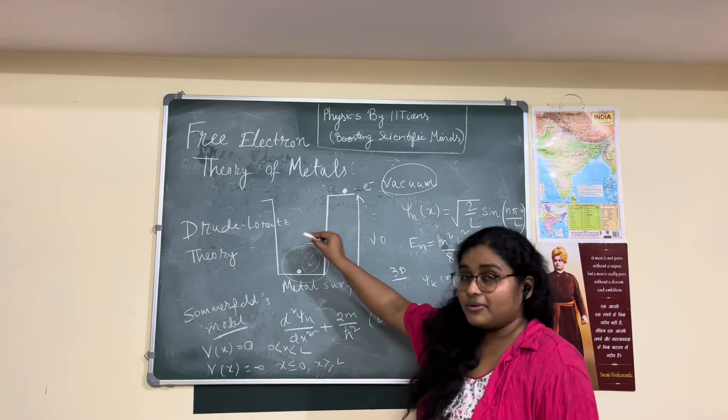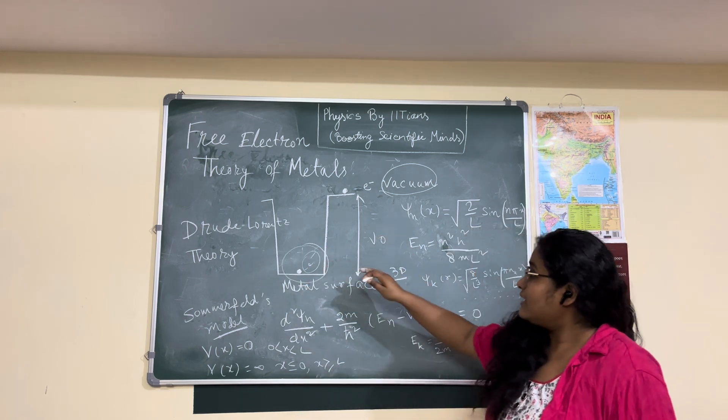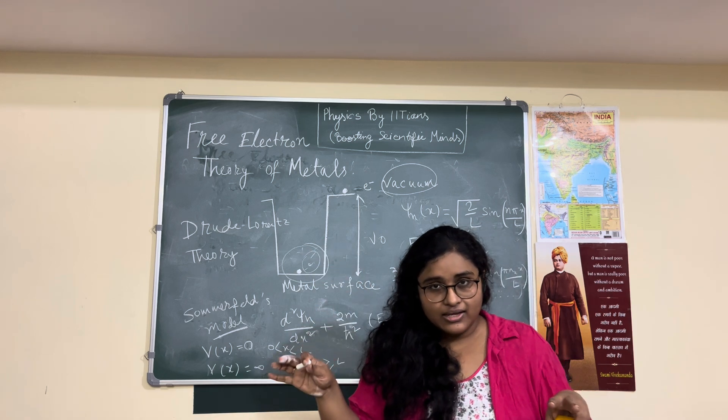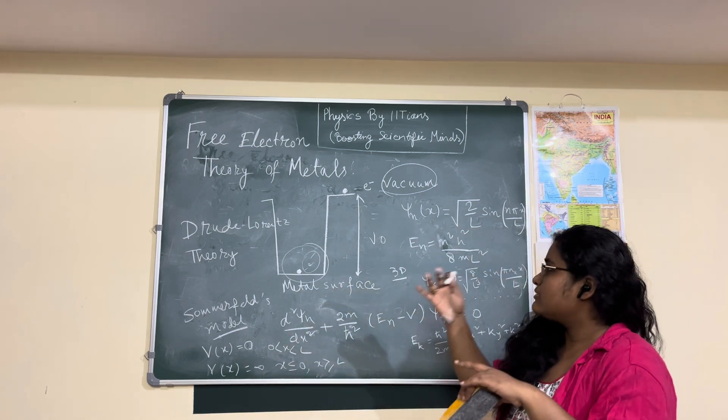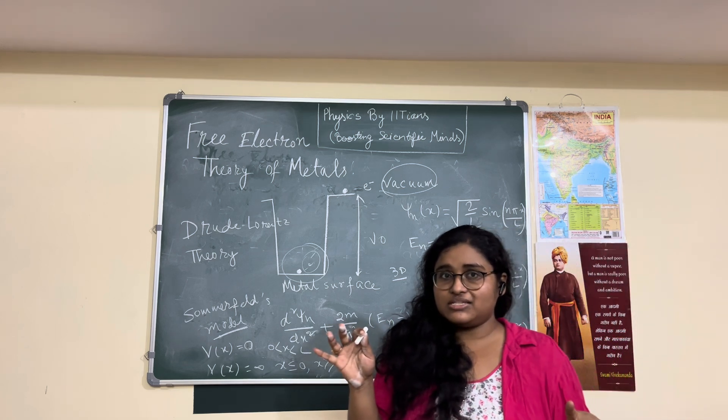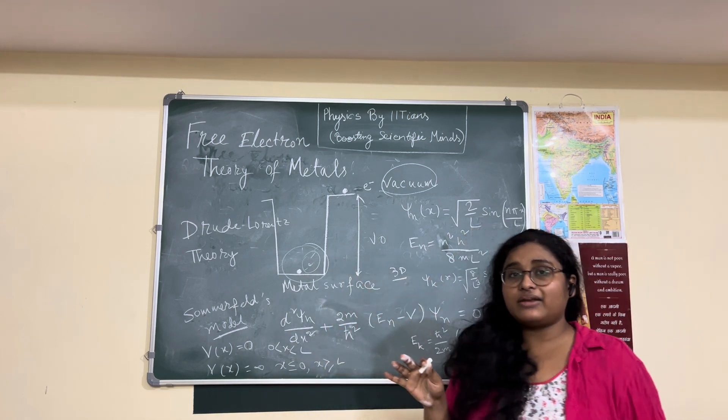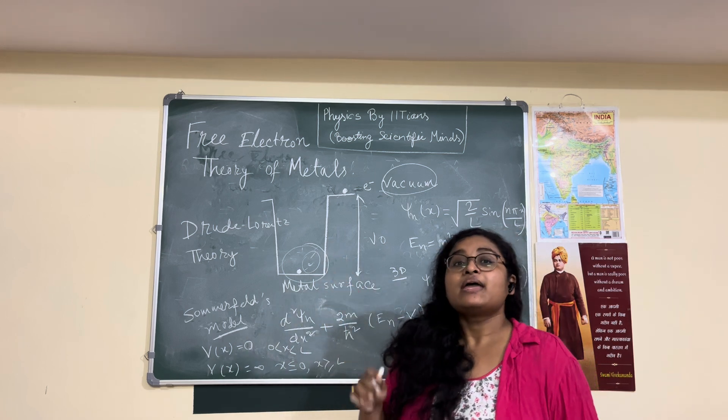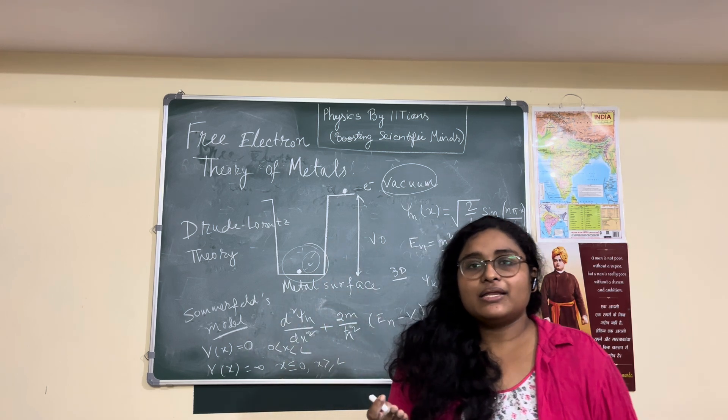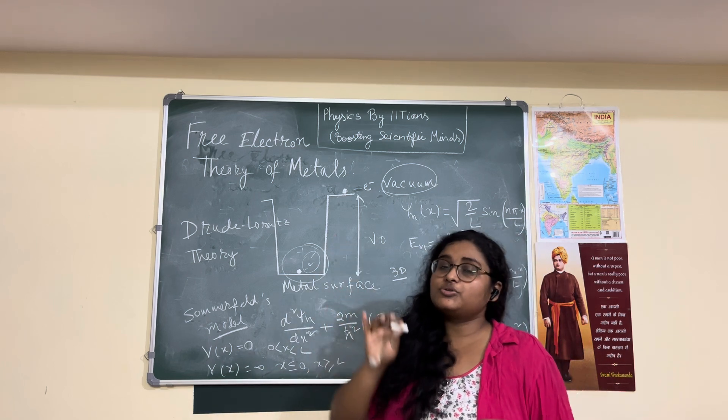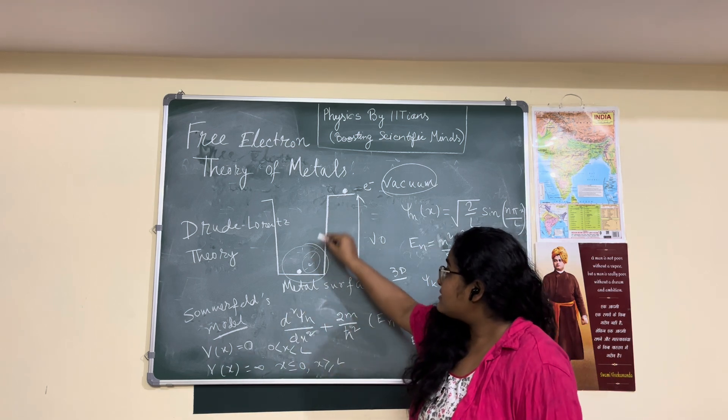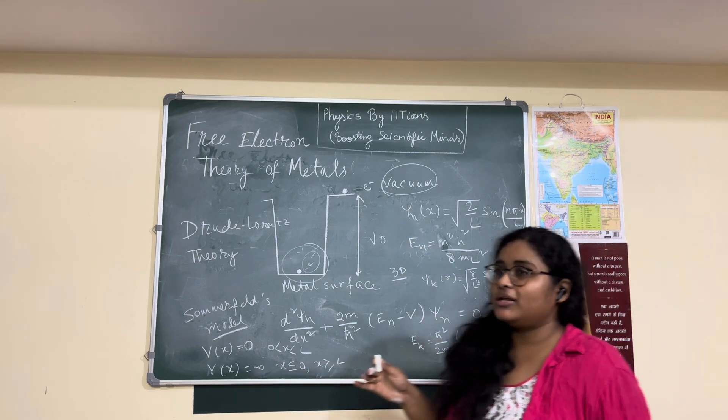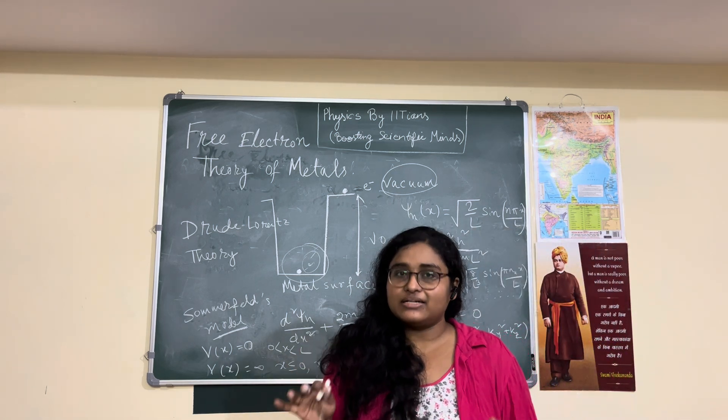So it is not completely free, but here it was approximated that they are almost free and they are not interacting with each other. So the Coulombic interaction of the electron with other electrons was ignored, as well as the Coulombic interaction of the electron and the ionic cores was also ignored.